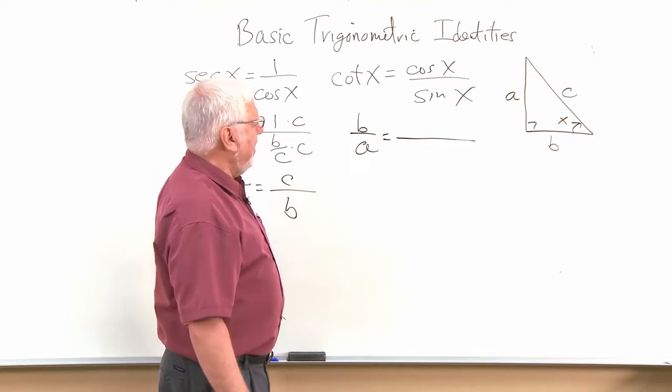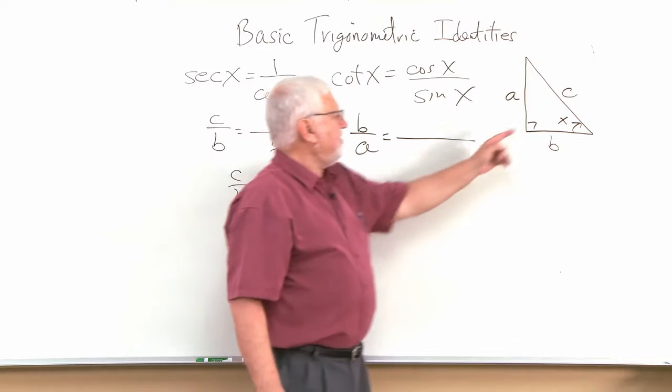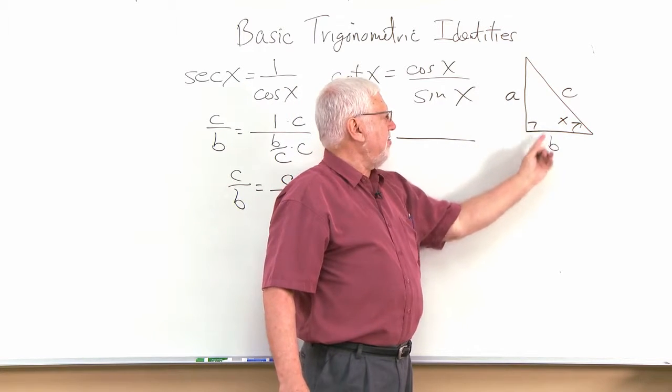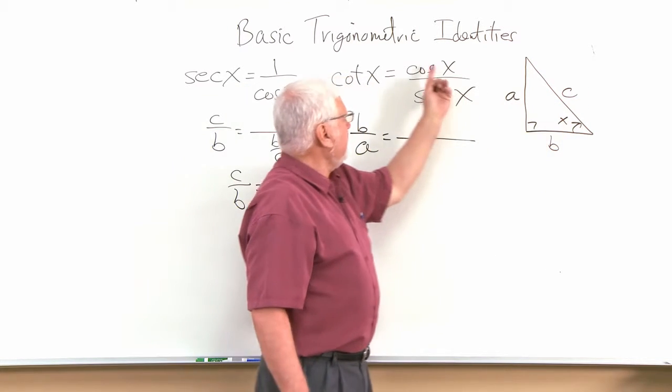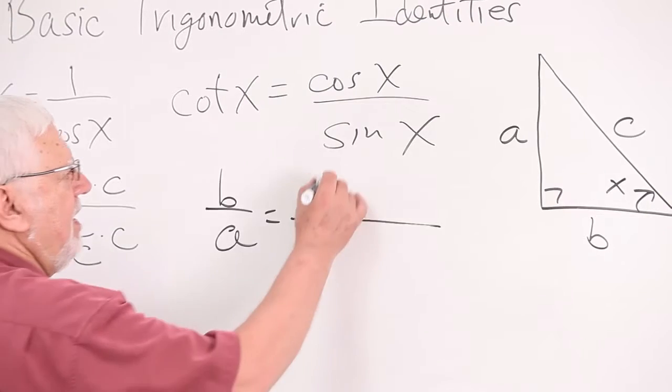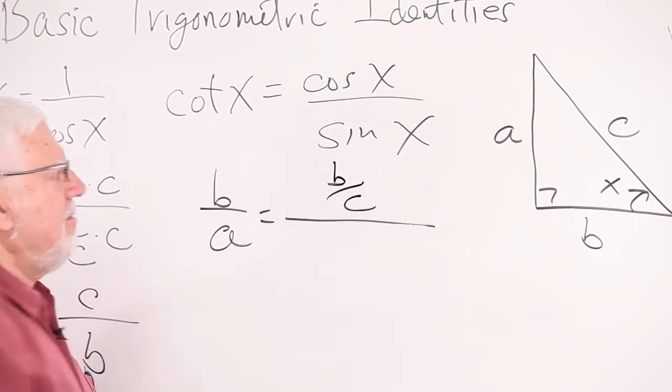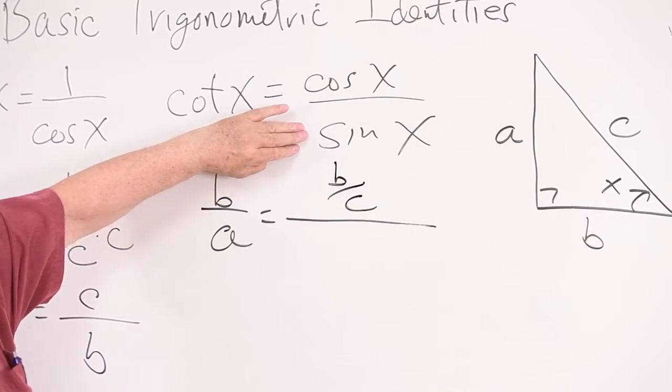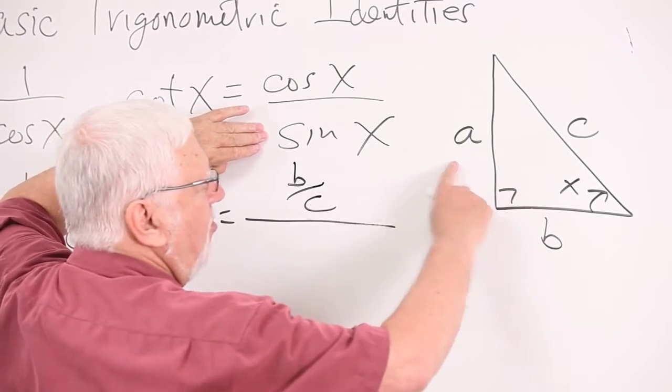Now think a minute about the cosine, well we already did that. The cosine by definition is the adjacent over the hypotenuse. So this is going to be b over c. And the definition says the sine is the opposite over the hypotenuse.